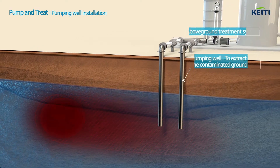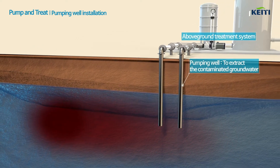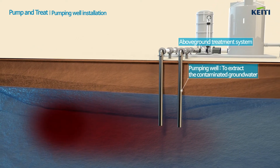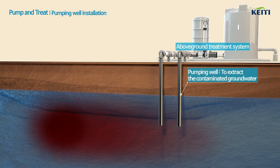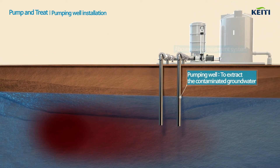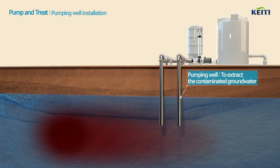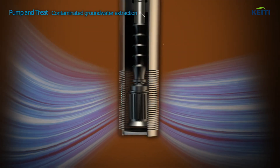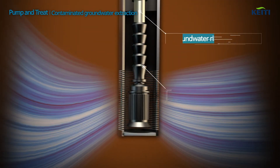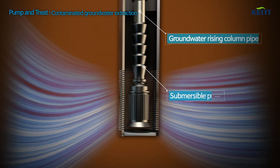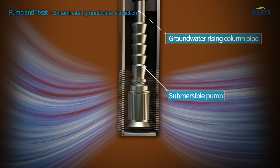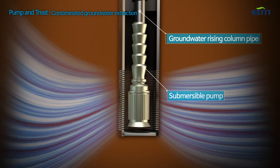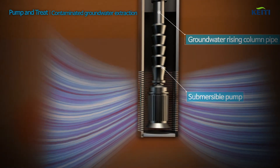Install pumping wells to extract the contaminated groundwater and an above-ground treatment system to treat the contaminants. The submersible pump inside the pumping well extracts the contaminated groundwater out to the surface.